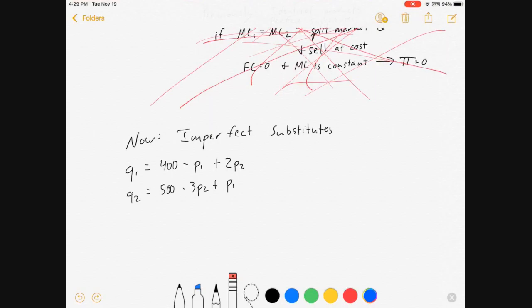And we'll do something similar for firm 2: 500 minus 3P2 plus P1. So we've got these goods that can be substituted for each other to some extent, but the degree of substitution is not perfect. They don't enter the same. And we're going to find that that is a source of market power.